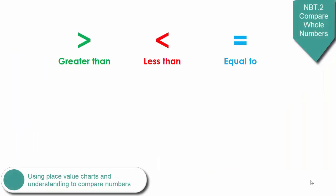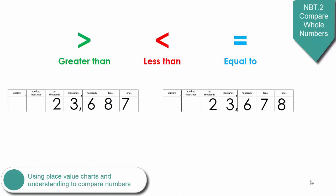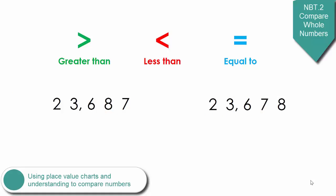Students will use the symbols greater than, less than, and equal to to compare multi-digit whole numbers. Once again, using a place value chart may assist with the understanding of this concept. Let's compare these two numbers, 23,687 and 23,678. Both numbers have a 2 in the 10 thousands place, a 3 in the thousands place, and a 6 in the hundreds place. However, the first number has an 8 in the tens place, and the second number has a 7 in the tens place. 80 is greater than 70, therefore 23,687 is greater than 23,678.